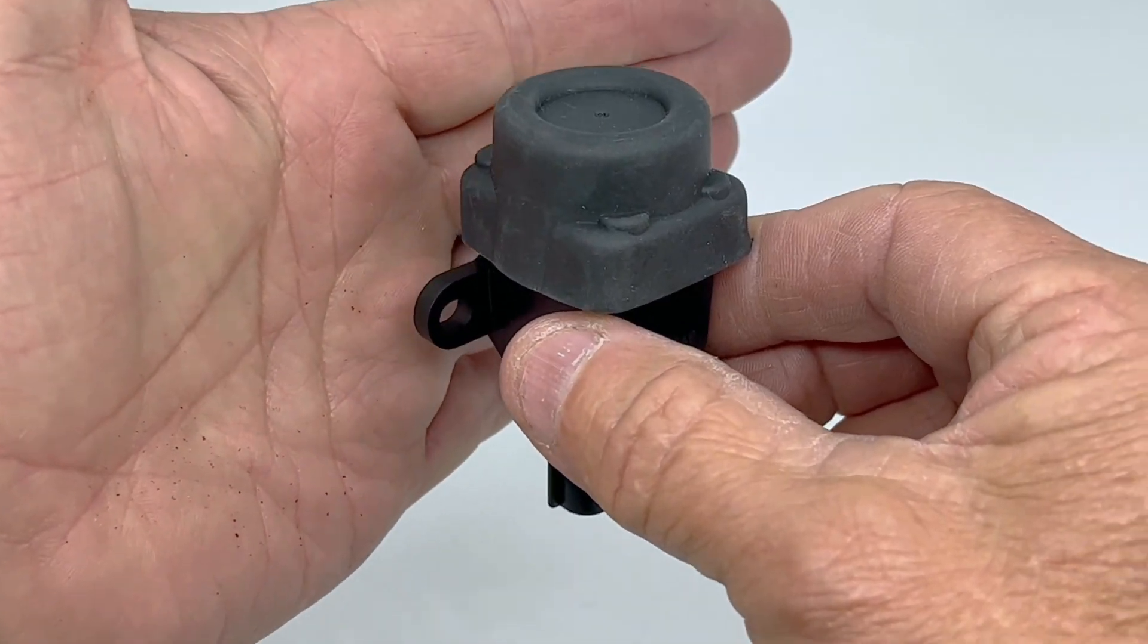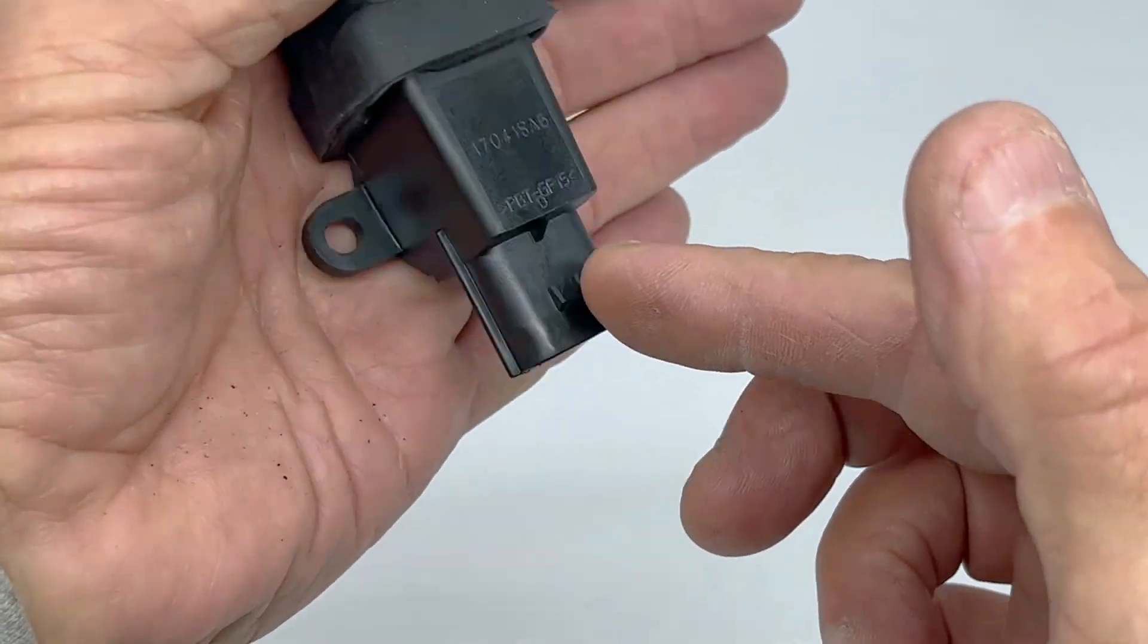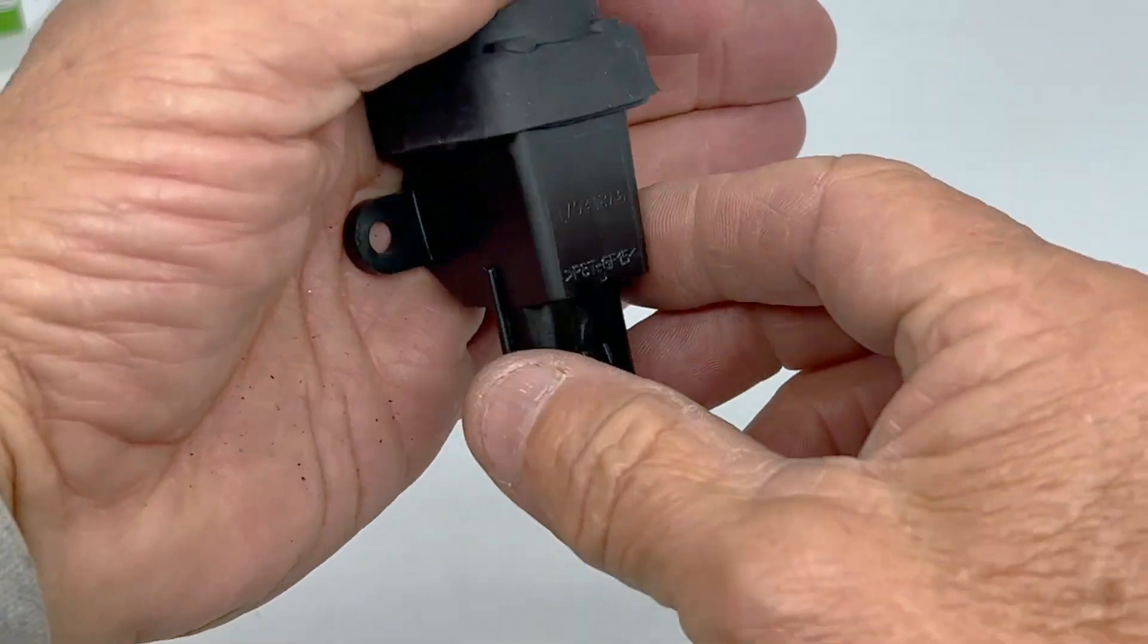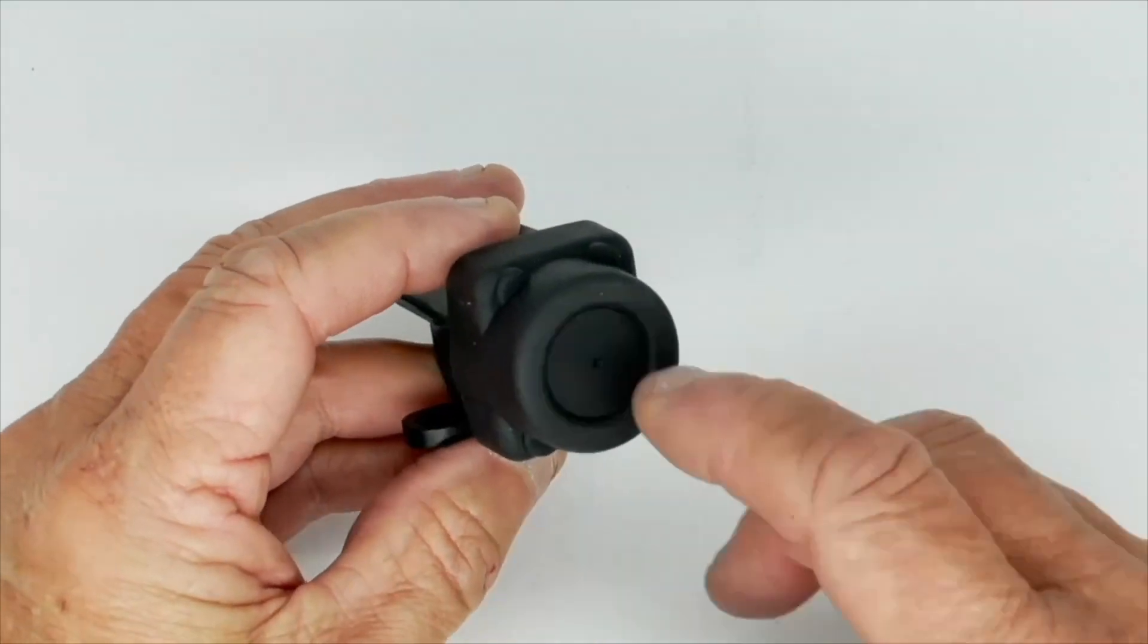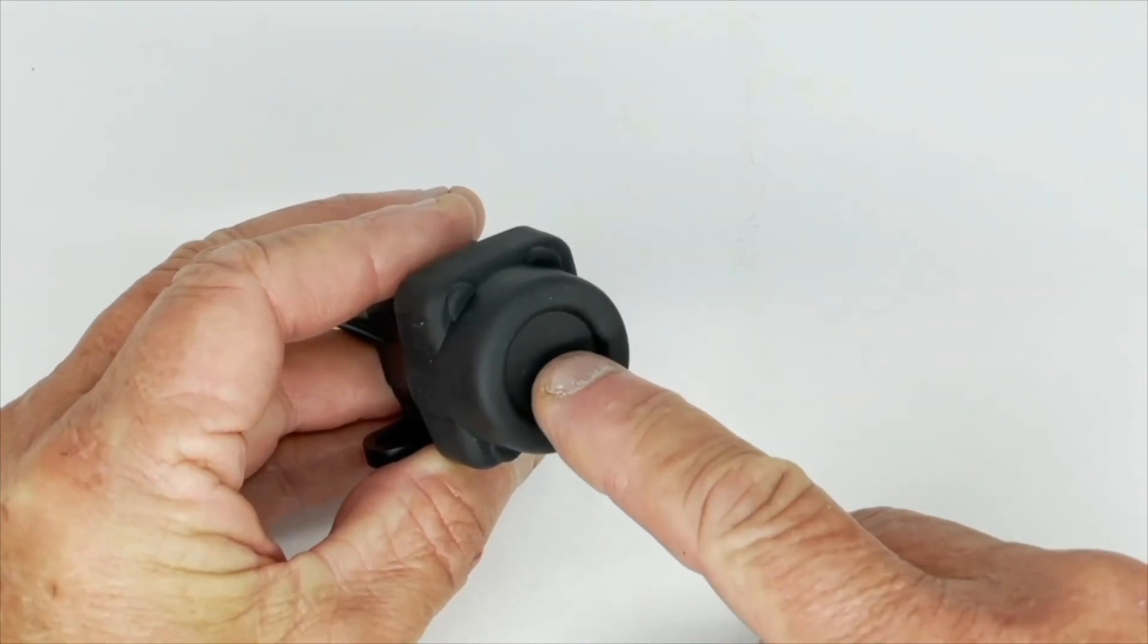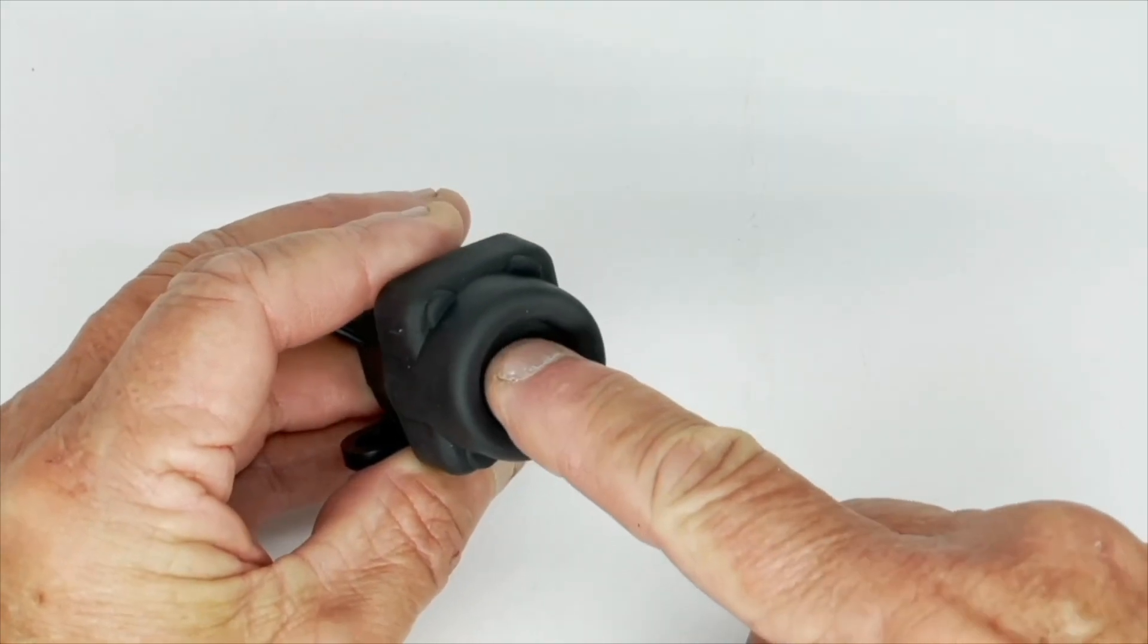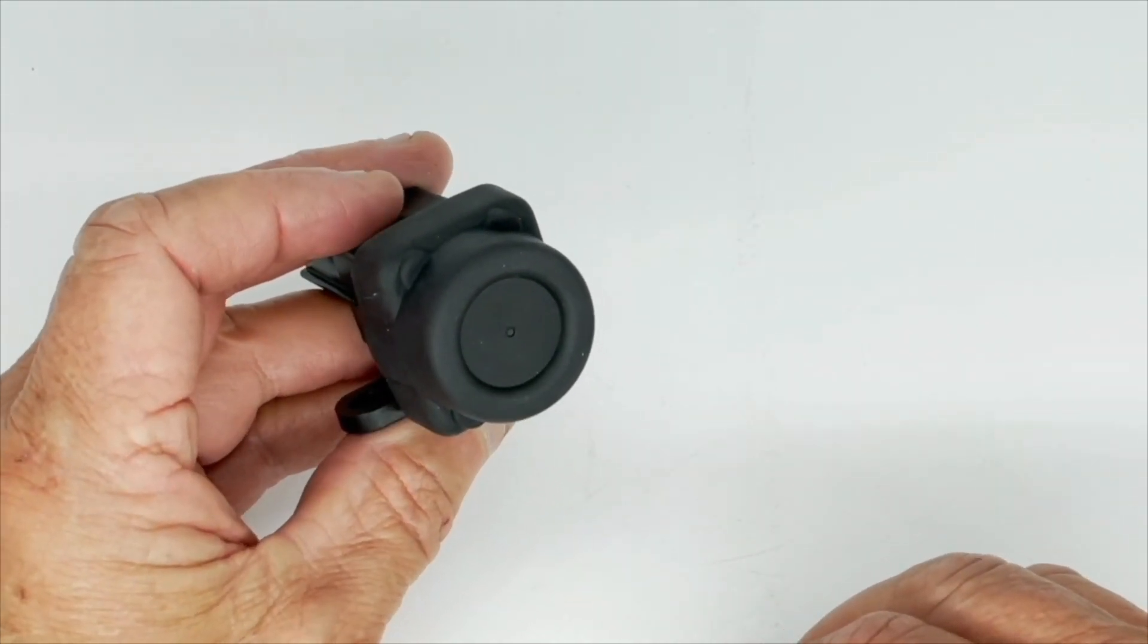It's designed to be mounted on a vertical surface with the plug pointing downwards. On this end is a rubber diaphragm which allows you to reset the switch. Just press the diaphragm and it will reset the switch in the event of it being tripped.